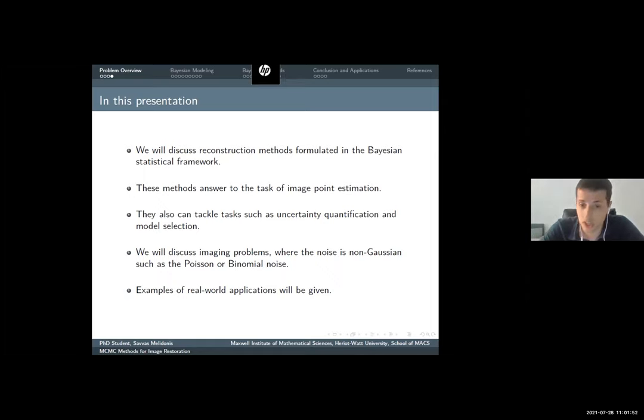We are going to tackle other tasks in the Bayesian framework, such as uncertainty quantification. Kostas gave some examples. Imagine you have a tomography image of a brain and there is a weird structure in your reconstructed image. Is that maybe a tumor or is it an artifact, a fault of your restored image? So uncertainty is quite important in such applications.